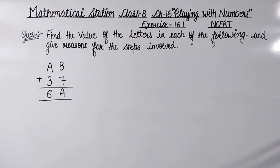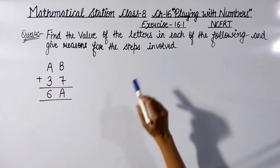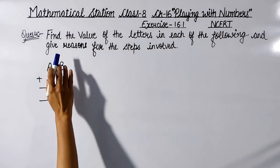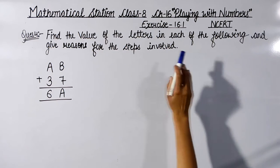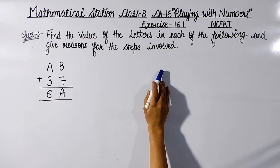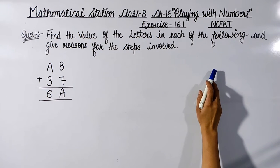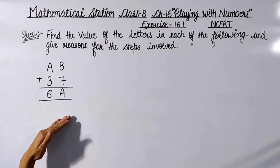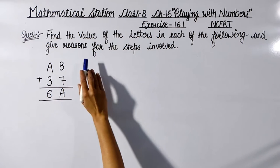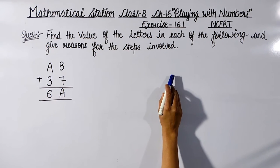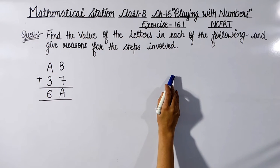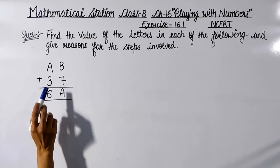Hello friends, welcome to my channel Mathematical Station. This is Chapter 16 'Playing with Numbers' from NCERT Class 8, Exercise 16.1, Question 4: Find the value of the letters in each of the following and give reasons for the steps involved.